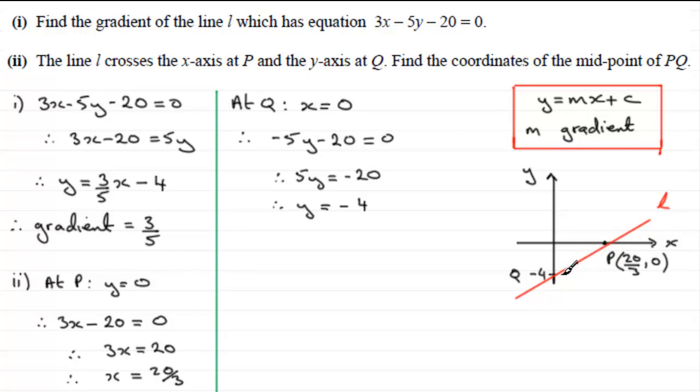And to get the midpoint of any two coordinates, all we need to do is just find the mean of the x-coordinates and the y-coordinates. So let's just put that down here, that therefore the midpoint of PQ,